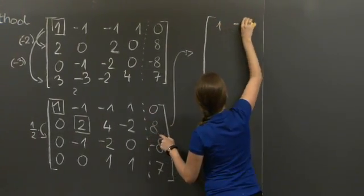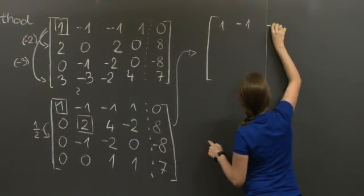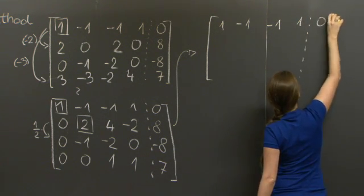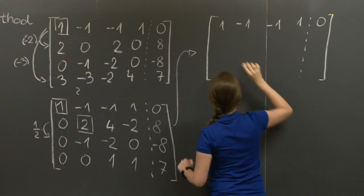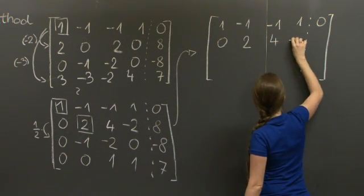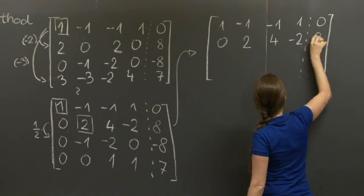The matrix that we get will have the first row the same, stays the same: 1, -1, -1, 1, 0. The second row stays the same: 0, 2, 4, -2, 8.